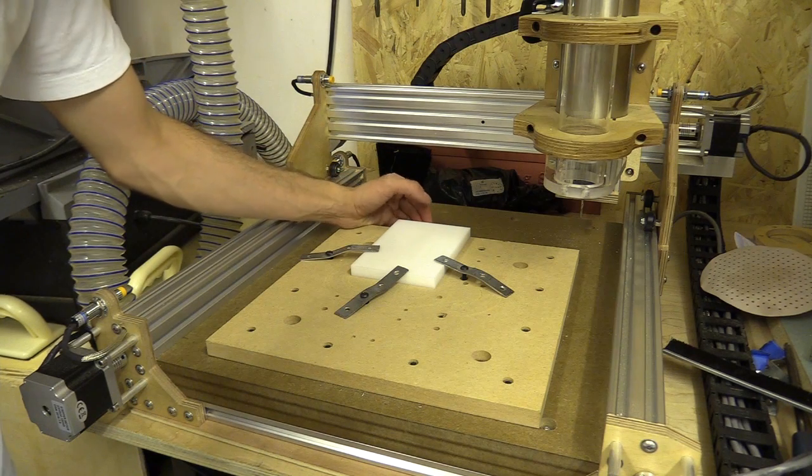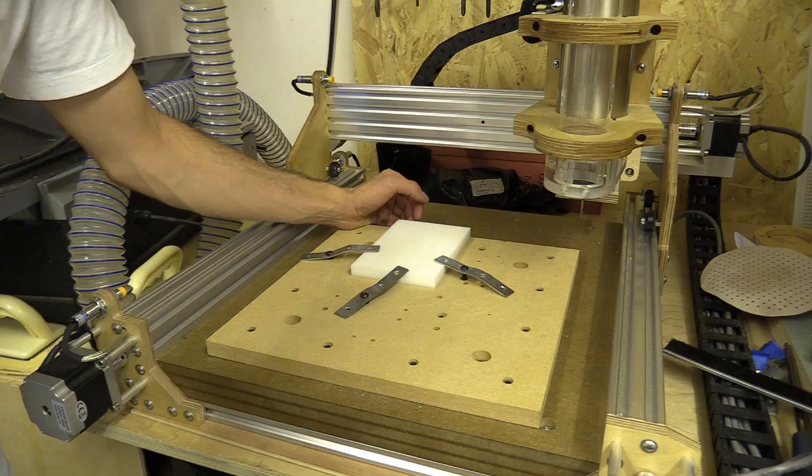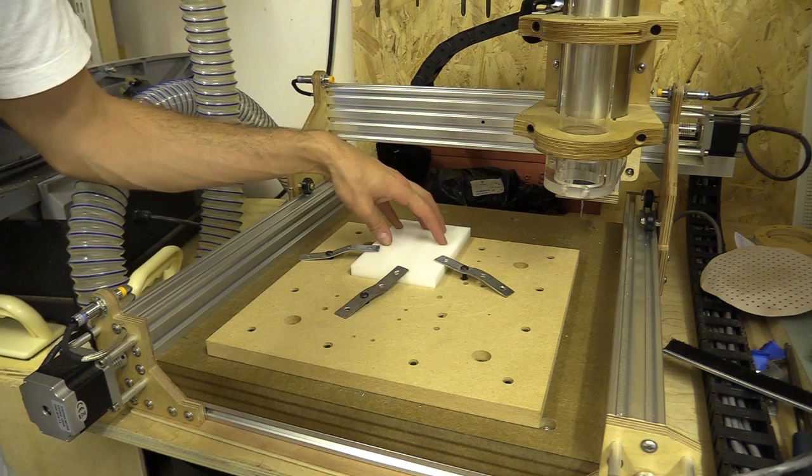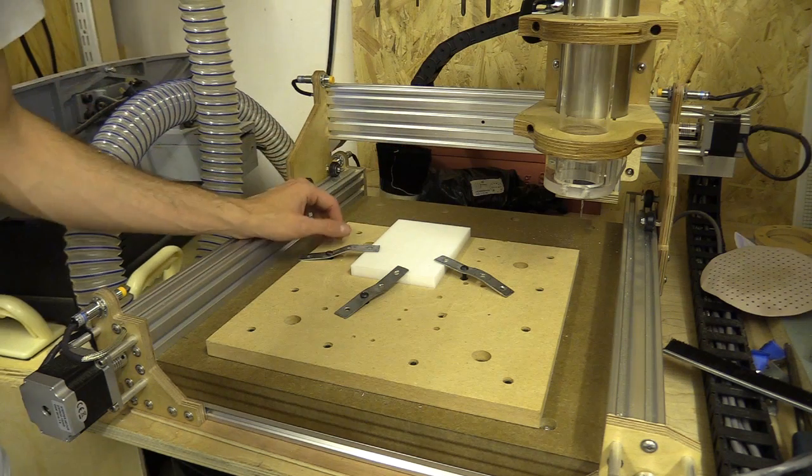This is a piece of 12mm C-Tool. It's very similar to Delrin, although I think this is the slightly softer version. Delrin is meant to be more durable.